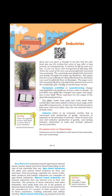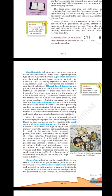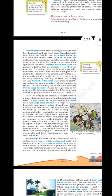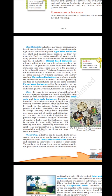Classification of industries: Industries can be classified on the basis of raw materials, size and ownership. Regarding raw materials, industries may be agro-based, mineral-based, marine-based and forest-based depending on the type of raw materials they use. Agro-based industries use plant and animal based products as their raw materials. Food processing, vegetable oil, cotton textile, dairy products and leather industries are examples of agro-based industries.